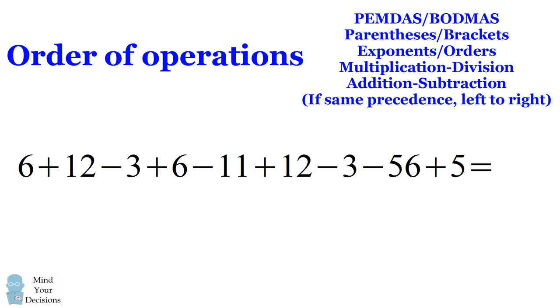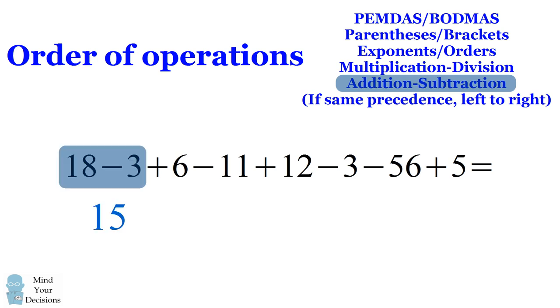The rest of the expression involves addition and subtraction, so we can evaluate this from left to right. 6 plus 12 is 18. 18 minus 3 is 15. 15 plus 6 is 21.